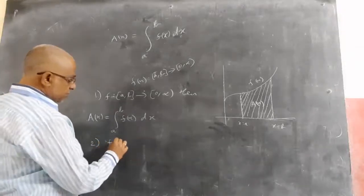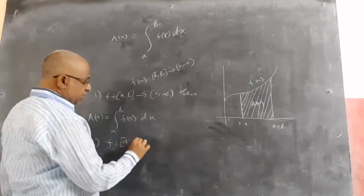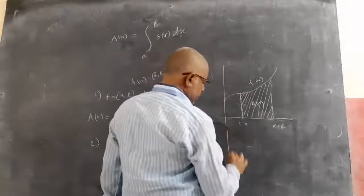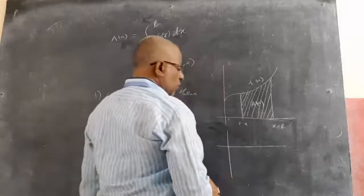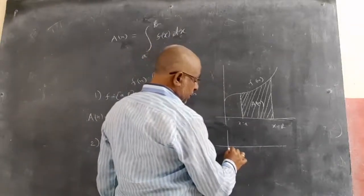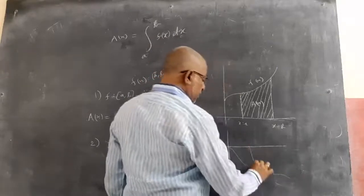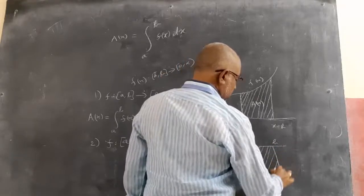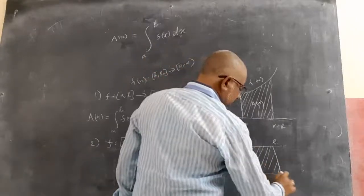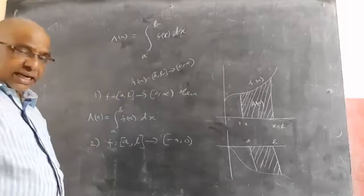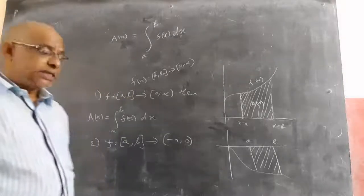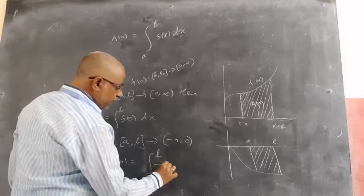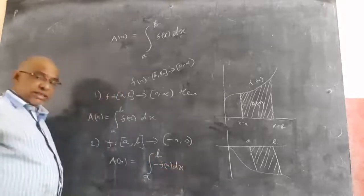If f is a negative function — means the range is from minus infinity to zero — then the function will be coming from minus infinity to zero, something like this. If I want the area between k and b, this area is always negative because y is always negative. But area cannot be negative — area is always positive. So we will take A(x) equal to integral of a to b minus f(x) dx.